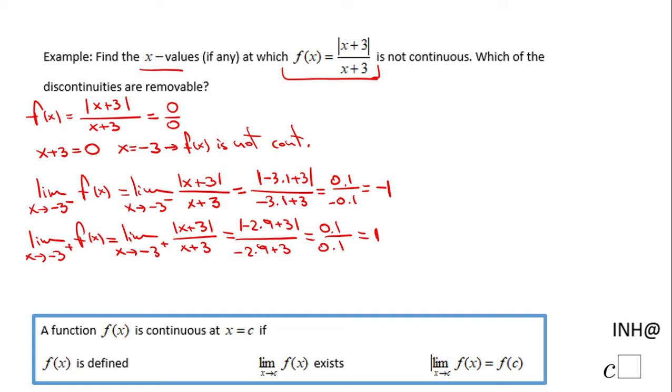These two limits are different. That means the limit as x approaches negative 3 of f(x) does not exist. Looking here, this condition is broken. The limit does not exist, so the function is not continuous. We knew that at x equals negative 3.